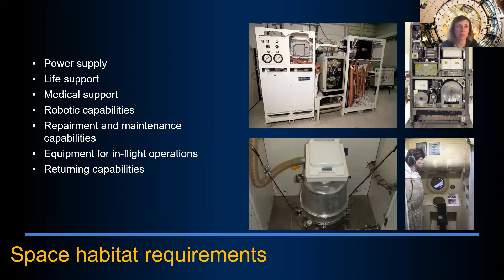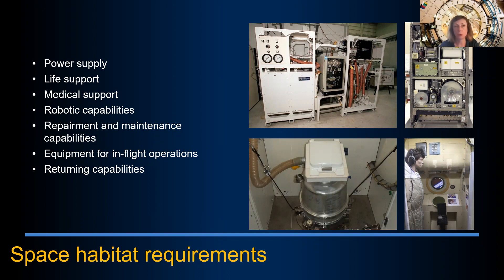We need to think about power supply, life support, and medical support — and it depends on the mission how much medical support we can provide. Robotic capabilities are always a must. We always have to think about maintenance and repair, what we can bring with us and store inside the habitat. Also equipment for in-flight operations, meaning if the crew will have to do EVAs — extravehicular activities — that support has to be provided, and we need to think about return capabilities.